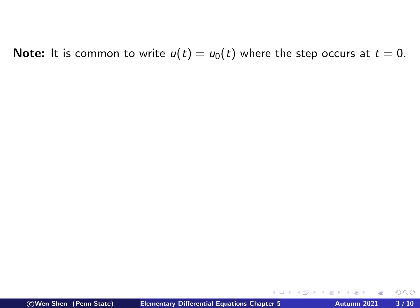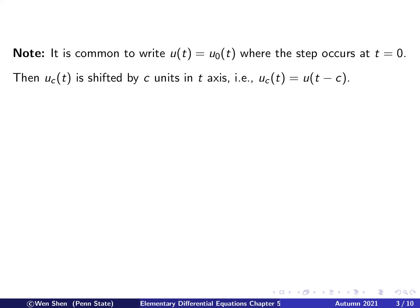A short note: it is common to write, for the special case when c equals zero — that is, the function has an upward step at t equals zero — we would usually just write u of t. It's just a convention. For the function u_c of t with c greater than zero, it can also be obtained by shifting u of t by c units in the t-axis. That is, we can write u_c(t) equal to u(t minus c).